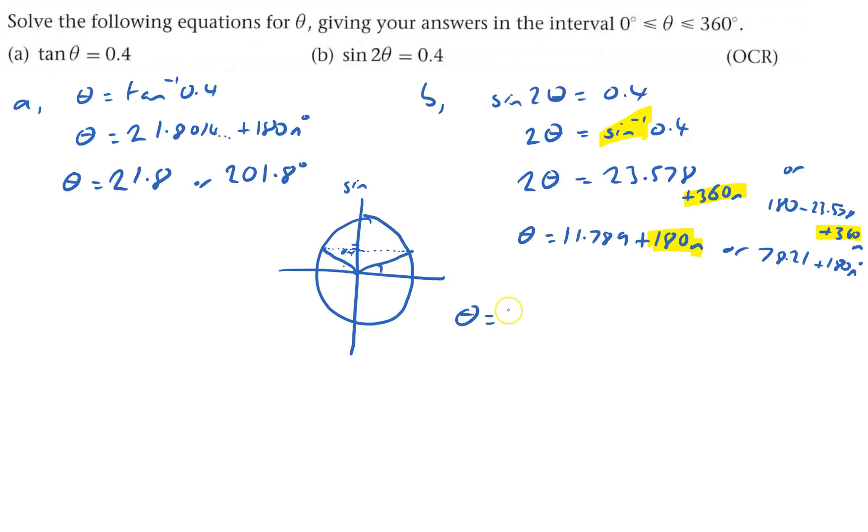The lowest it could be is 11 point, let's call it 11.8 degrees. Or it could be this one over here, 78.21 or 78.2. Or it could be when n's 1 here, so 180 plus that, which is 191.8. Or finally, it could be this one here, when n's 1 here, so 180 plus that, which is 258.2. And that's, well, I suppose it's all degrees, obviously. And that's done.